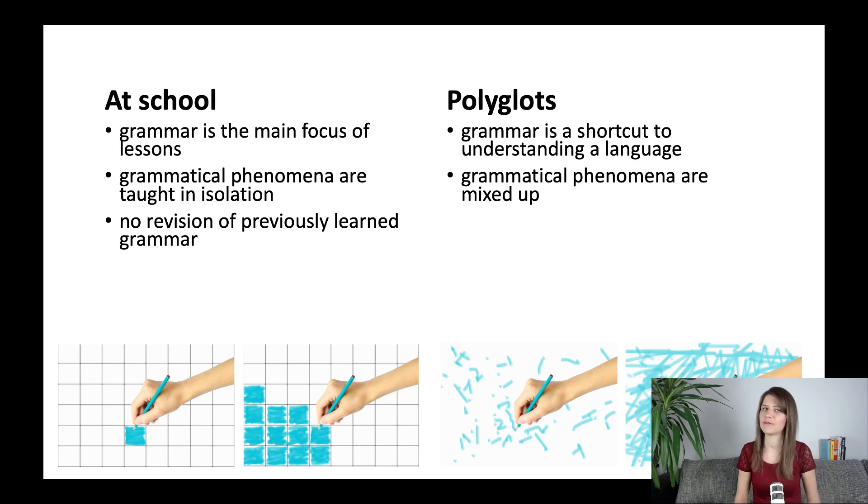At school usually there is no revision or very little revision of the previously learned grammar because the teacher needs to cover different topics. They cannot really go through everything that they have covered in the past year or half year. There may be a quick revision but usually I believe that this revision is just not enough. It's not sufficient. Polyglots on the other hand make a lot of revision.